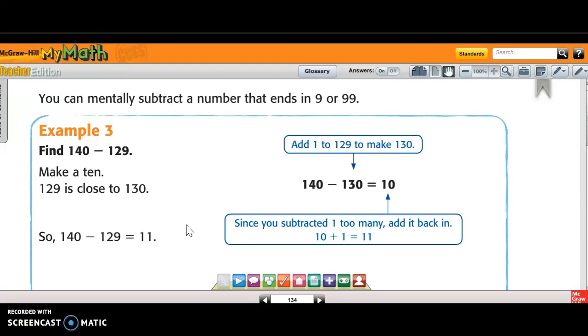It says, for example, number 3, you can mentally subtract a number that ends in 9 or 99. So if I have 140 minus 129, it says make a 10. So 129 is close to 130. So what they did was they added 1 to 129, and they got 140 minus 130, and they subtracted that. And they got 10. If I actually was going to do it without mentally subtracting, I have to borrow.